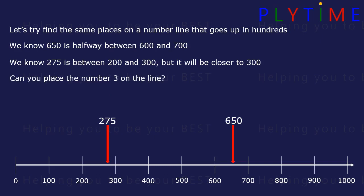Can you place the number 3 on the line? Sometimes it helps to split the gaps into smaller sections. We can half this, it's 50. Half again is 25. So 3 would be right by the zero here.